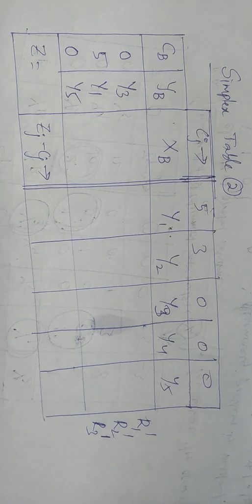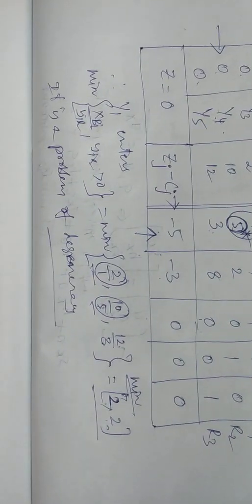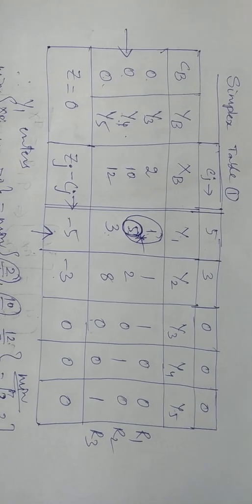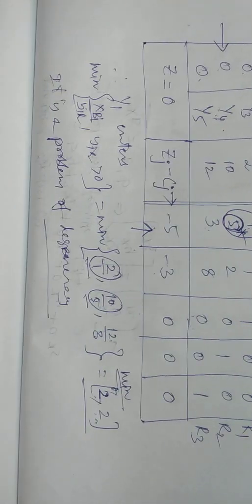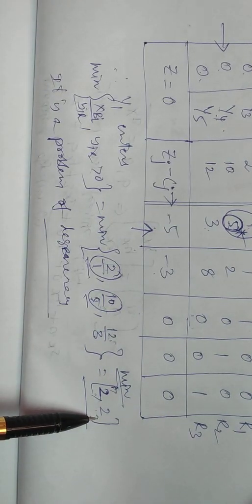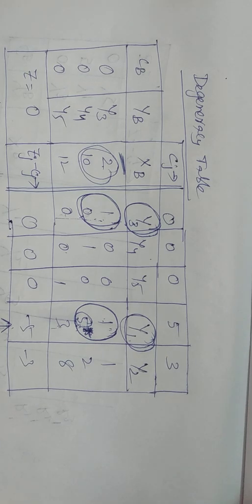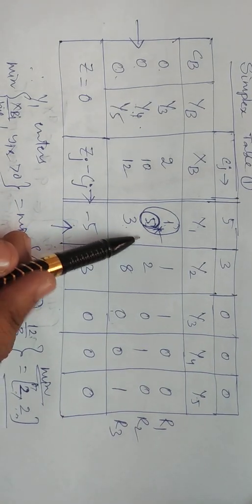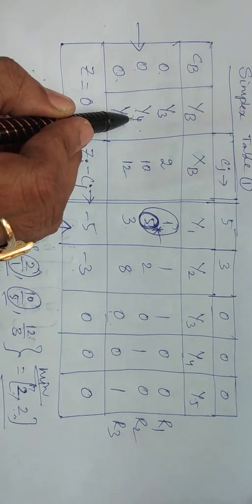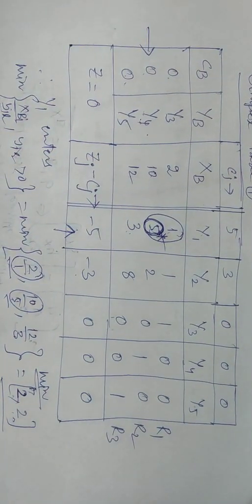This is Part 2 of the problem of degeneracy in linear programming. At the end of Part 1, we had entered Simplex Table 2. The two particular minimum ratios were the same — 2 and 2 — so it was a problem of degeneracy. We formulated the degeneracy table, resolved degeneracy with minimum ratio 0, and identified element 5 corresponding to Y4. Y4 leaves, and we are now entering Simplex Table 2.